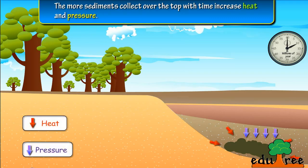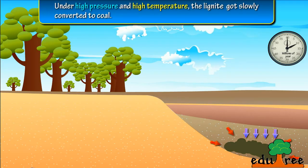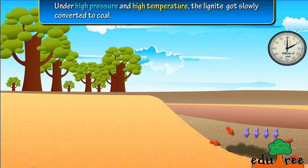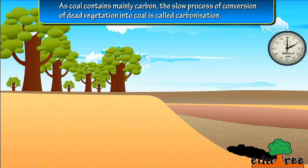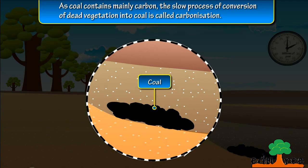Under high pressure and high temperature, the lignite slowly converted to coal. As coal contains mainly carbon, the slow process of conversion...